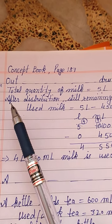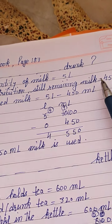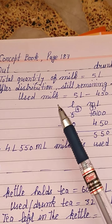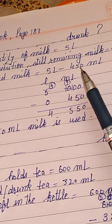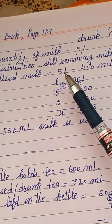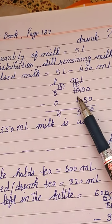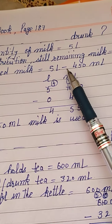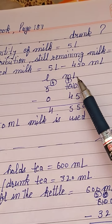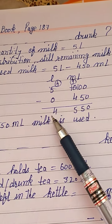After distribution, still remaining milk is 450 millilitres. Used milk will be 5 litres minus 450 millilitres. We write litres and millilitres columns: this is 5 litres and 000 millilitres, minus 450 millilitres and 0 litres.